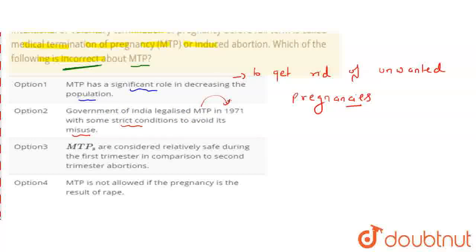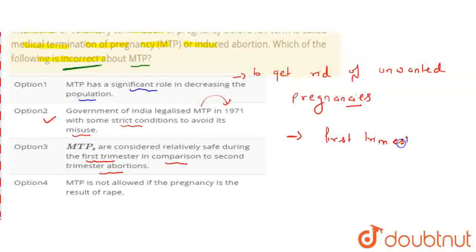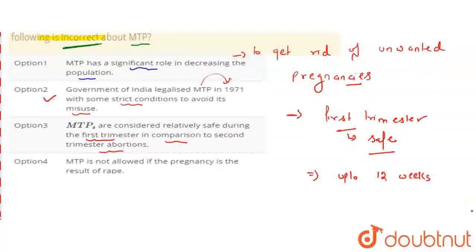This is our third statement: MTP is safe during the first trimester, in comparison to the second trimester. This is right. The first trimester means the starting months of pregnancy — the same as the first 12 weeks of pregnancy. But if we look at the 5th to 9th month, this process is not safe.